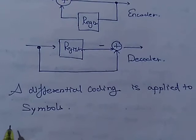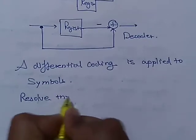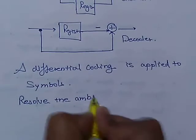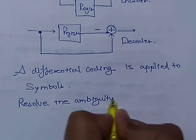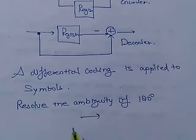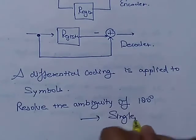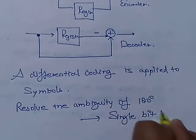It is basically used to resolve the ambiguity. To resolve the ambiguity of 180 degrees, single bit is used.